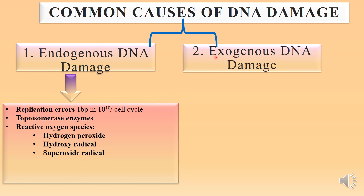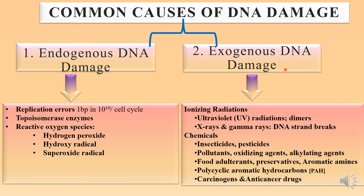The second kind is exogenous DNA damage, caused by ionizing radiations including ultraviolet radiations, which cause dimers to form between base pairs, and X-rays and gamma rays, which cause DNA strand breaks. Apart from ionizing radiation, chemicals also cause exogenous DNA damage. These include insecticides, pesticides, pollutants, oxidizing agents, alkylating agents, food adulterants, preservatives, aromatic amines, polycyclic aromatic hydrocarbons, carcinogens, and even anti-cancer drugs.